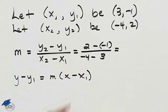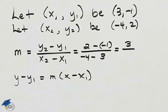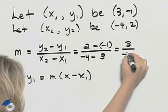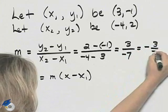Simplifying, 2 minus negative 1 is the same as 2 plus 1, which is 3. Negative 4 minus 3 is the same as negative 4 plus a negative 3, so that's negative 7. And so our slope is negative 3 sevenths.